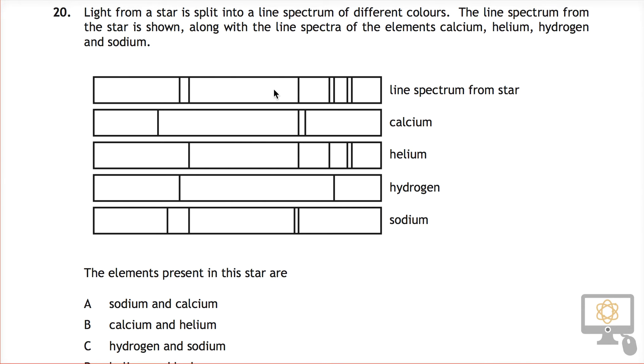You can only see a certain number of different colours because there are only particular elements in the star.